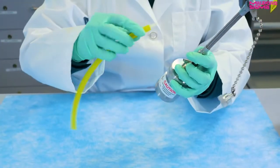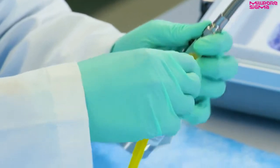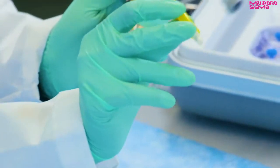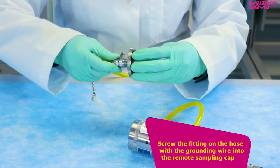Connect the bypass hose from the three-way inlet valve into either hole on the side of the sampler base. Screw the fitting on the hose with the grounding wire into the remote sampling cap.